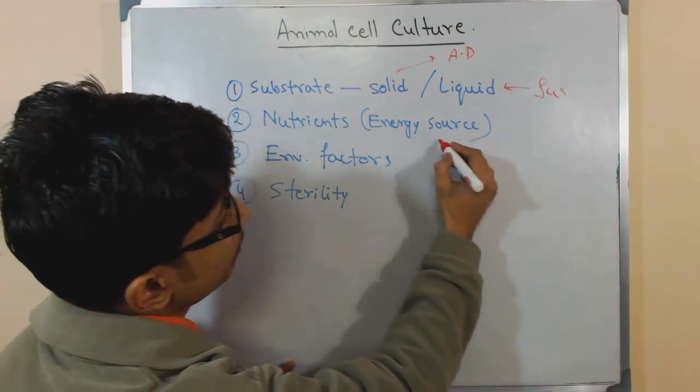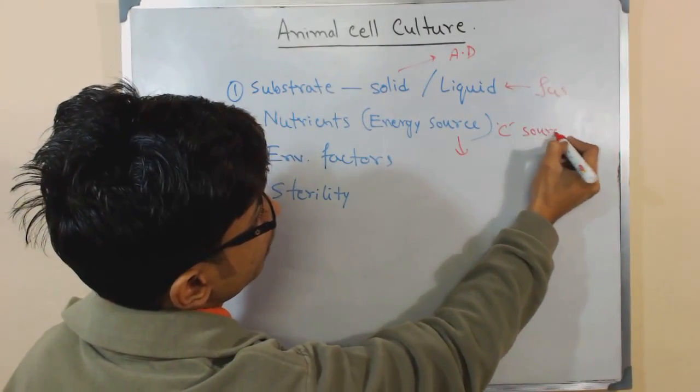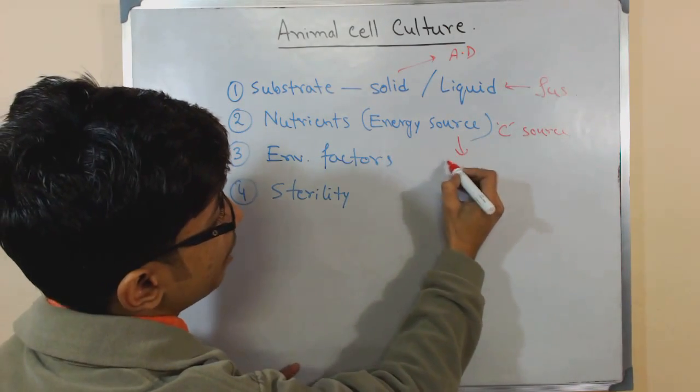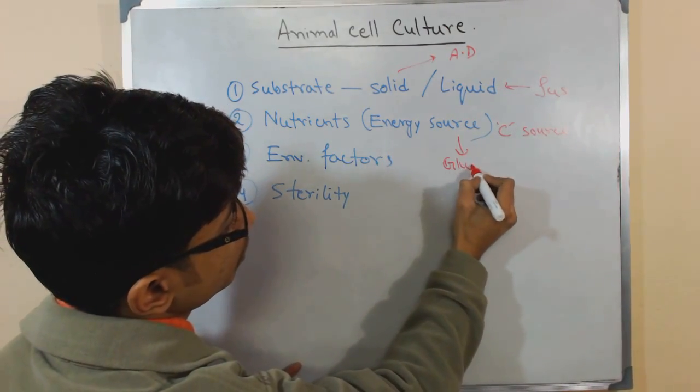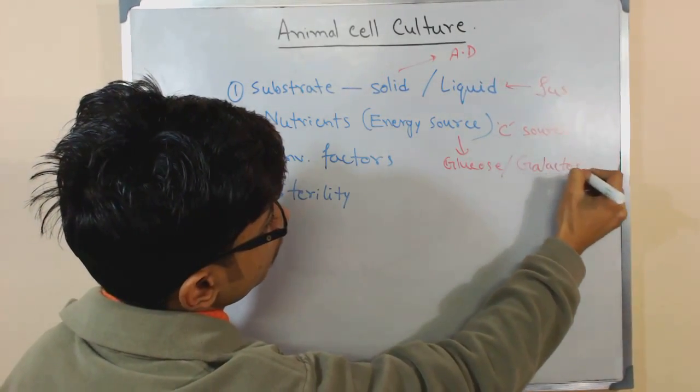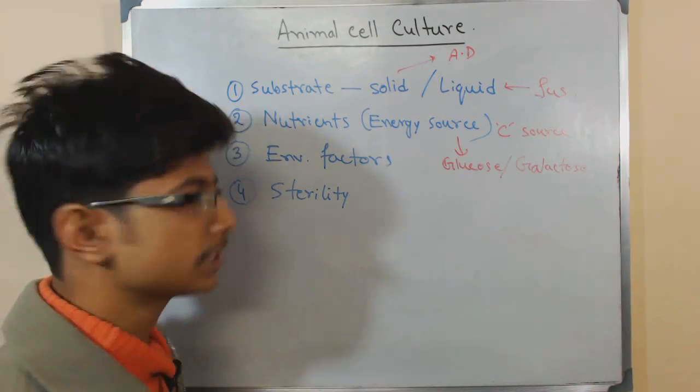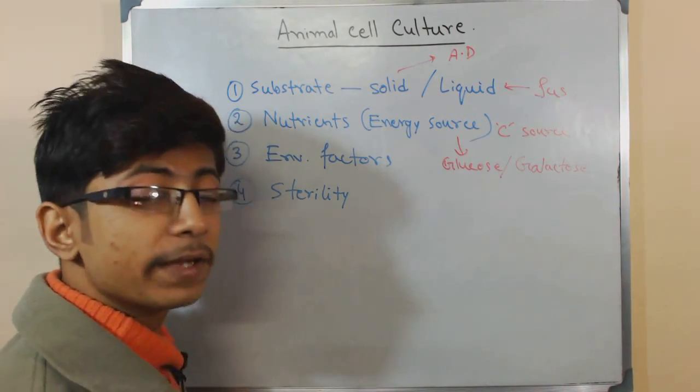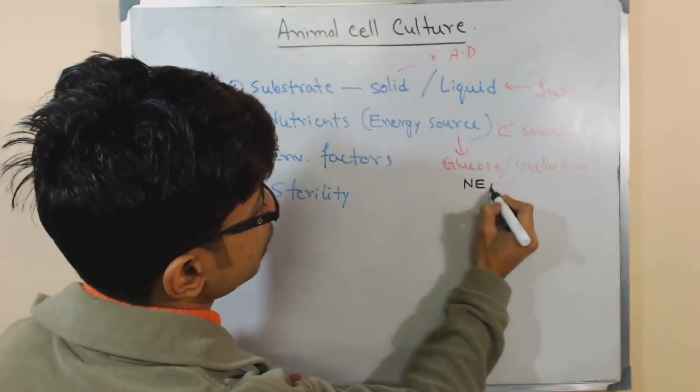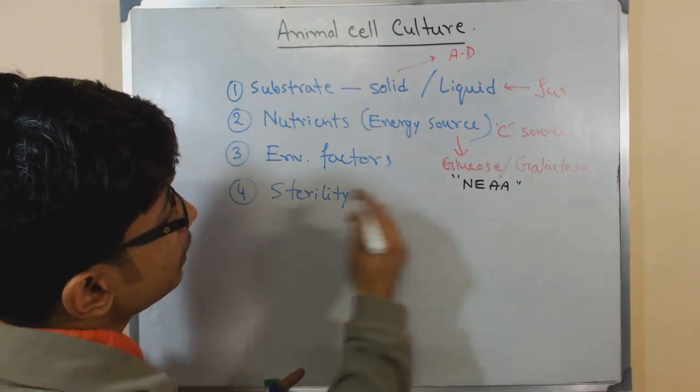Nutrients means energy source - it can be carbon source and also nitrogen source. For the carbon source part we have glucose, we have galactose. And for the nitrogen source we have amino acids - different amino acids are provided. Even non-essential amino acids are also provided for the growth of these cells.